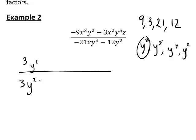So 3y² can be taken out as a common factor on both numerator and denominator. The next step is optional: you will notice that each term on both numerator and denominator has a negative sign, so you might also like to take that negative out as a common factor, as it is often considered simpler to avoid too many negative signs.